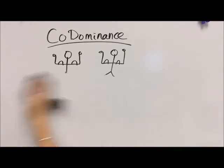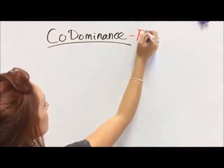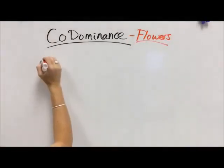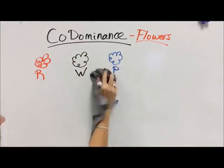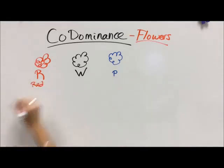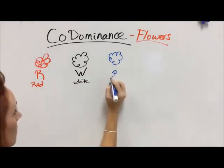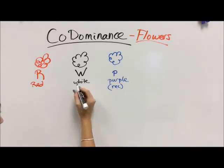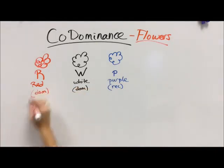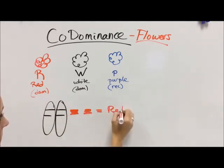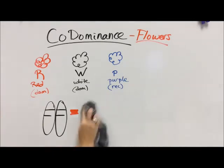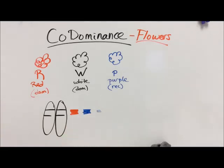Two examples — the first is a really clear example involving color: flowers. Flowers have three coloring alleles — red, white, and purple. Red and white are both dominant, and purple is recessive. So if I draw my chromosomes with the color gene: two reds gives a red flower. A red and a purple — red is dominant, so it covers up the purple and we get a red flower that hides the purple information.